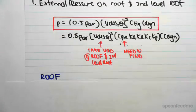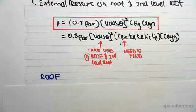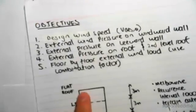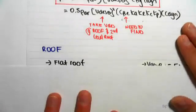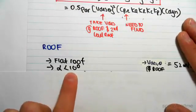So let's do the top roof first. So we're going to be doing this top flat roof over there on the tower. Now it's a flat roof, alpha is less than 10 degrees because it's flat.